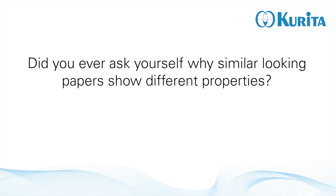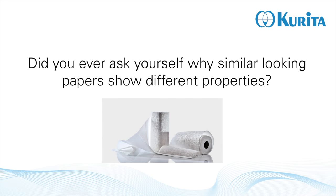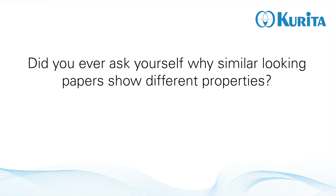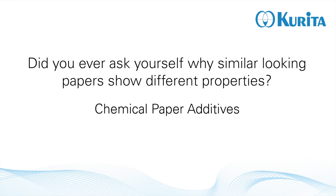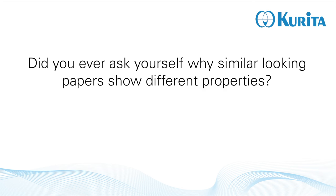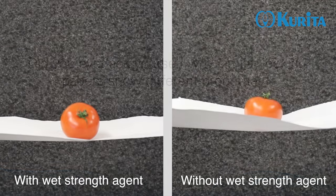Did you ever ask yourself why similar looking papers show different properties? For example, kitchen rolls and toilet paper. The reasons for this are chemical paper additives that lend specific properties to paper which they naturally don't have.